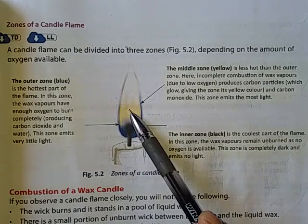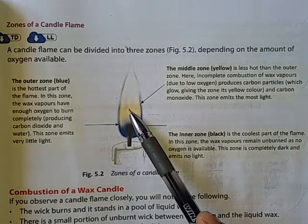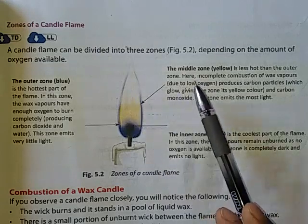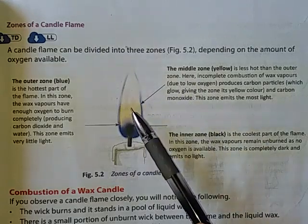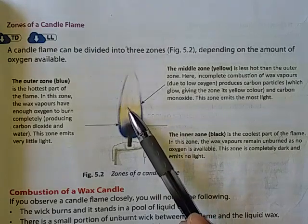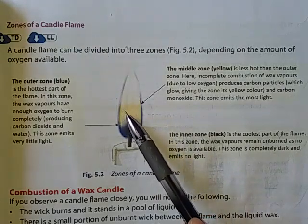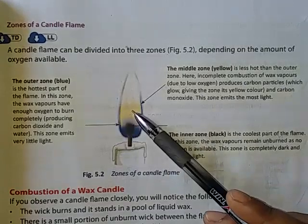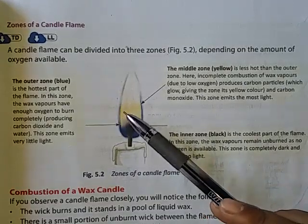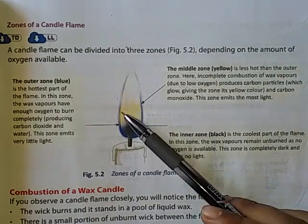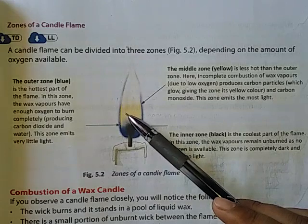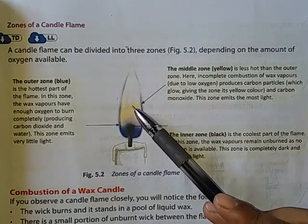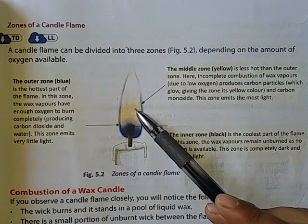The next zone is the middle zone. This zone is also known as the yellow zone because it is the brightest zone of a flame. It is less hot than the outer zone. Incomplete combustion of wax vapor occurs here due to insufficient supply of oxygen, producing carbon particles which glow and give this zone its yellow color. Carbon monoxide gas is also produced, and this zone emits the most light.